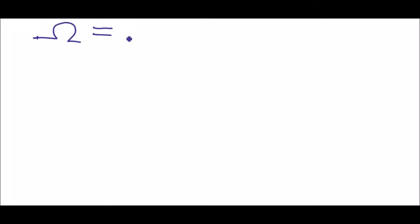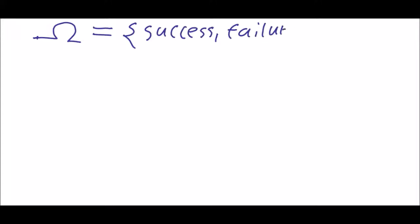Now we look at the set of all outcomes. The set of all outcomes is called Omega, and in this case it contains just success and failure from the point of view of A. The success for player A is the failure for player B and vice versa.